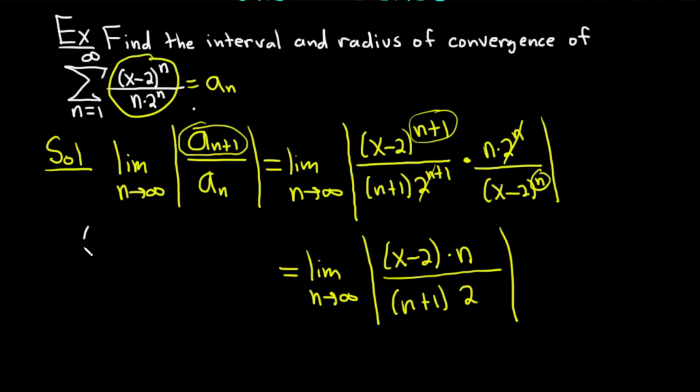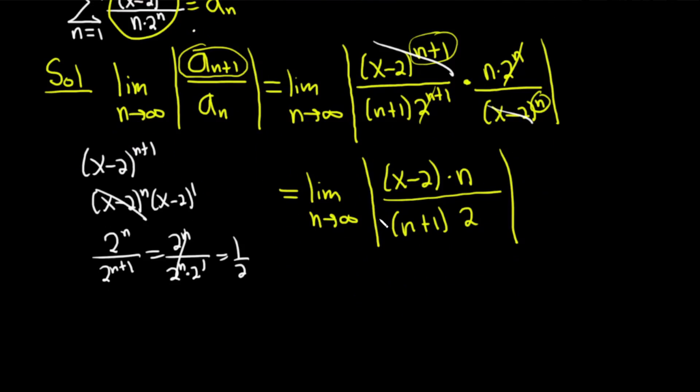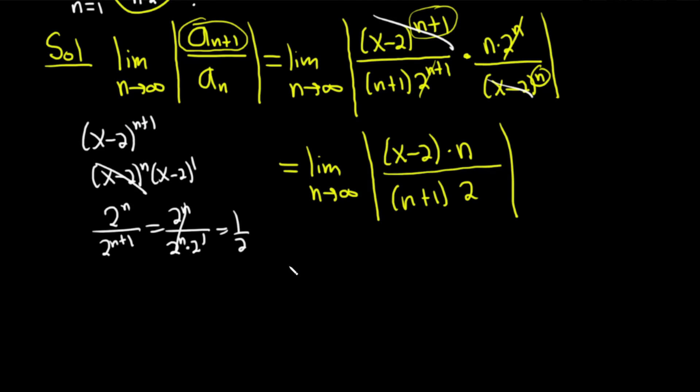I'll show you one of them. If we have x minus 2 to the n plus 1, that's x minus 2 to the n times x minus 2 to the 1. That's why the x minus 2 to the n canceled with the one on the bottom, leaving x minus 2. The same thing happened with 2 to the n and 2 to the n plus 1. These are things that after you do a couple of these problems, you'll be able to do them in your head. But those are the key steps for the algebra in every problem.